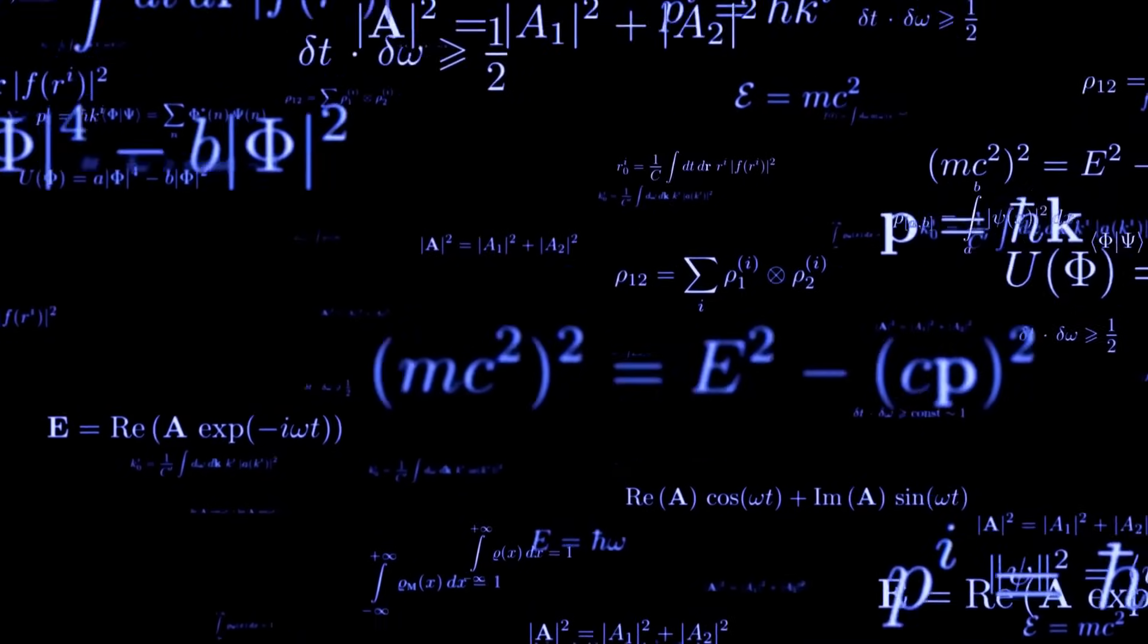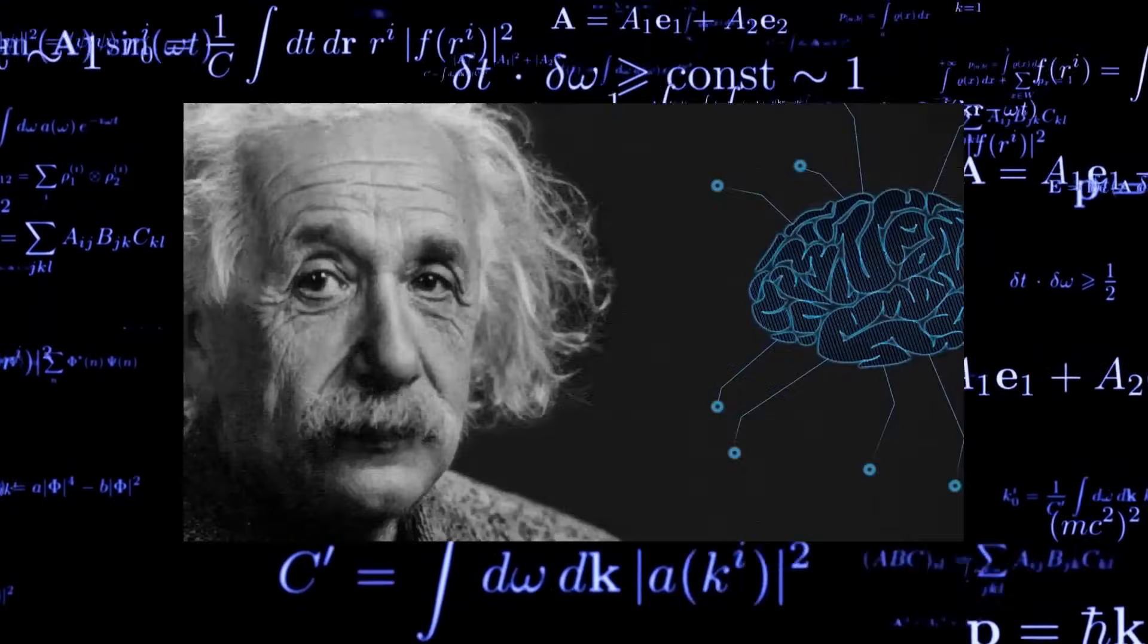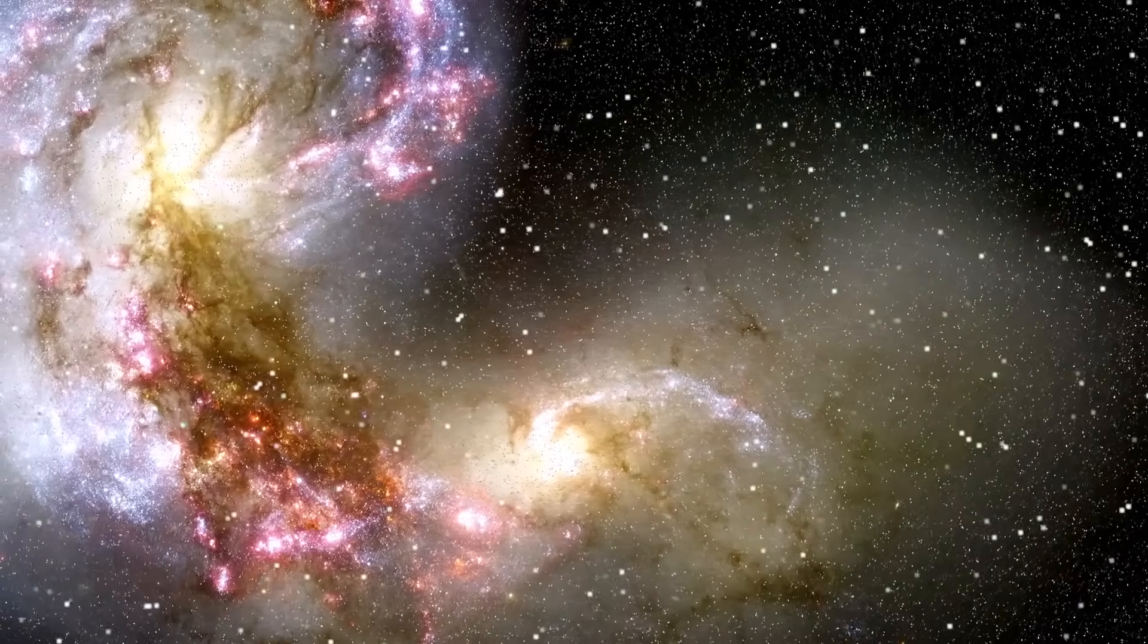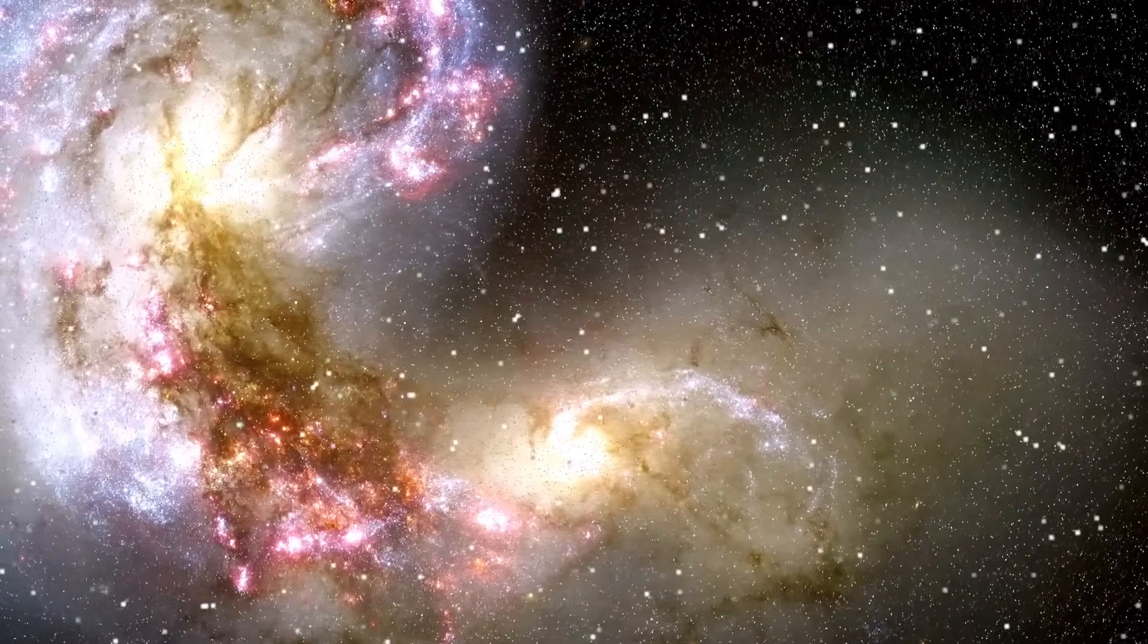And guess who gets another confirmation of this theory? Albert Einstein and his revolutionary theory of general relativity, which predicted that light could be bent by gravity. This observation fulfills Einstein's prophecy, reaffirming the brilliance of his ideas.